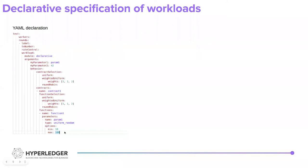In the declarative specification, there are lower-level parameters that go into a transaction, as well as functions associated with those parameters and contracts that may be present in the system being tested under Caliper. This cuts down the implementation to just specifying what is required, rather than handling everything else as well.